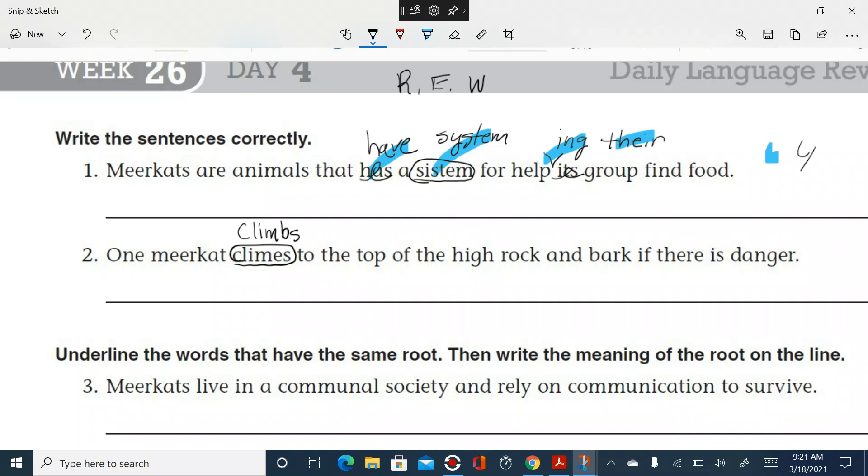Okay. One meerkat climbs to the top of the high rock and bark if there is danger. Bobby, get out of that chair, please. Stand up. Go get a new chair. Thank you. All right. One meerkat climbs to the top of the high rock, or it's probably more than one of them, right? So what should it be? The high rocks and barks if there is danger. Right? One meerkat climbs to the top of the, uh-oh. We don't want to say high rock. We want to say, yeah, let's do that. We need the superlative, right? So one meerkat climbs to the top of the highest rock and barks if there is danger.